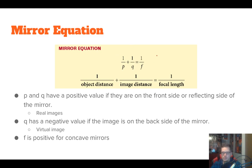We have two equations to use. The mirror equation states that 1/P + 1/Q = 1/F, where P is object distance, Q is image distance, and F is focal length. P and Q are positive if they are on the front side of the mirror, and negative if on the back side. So a real image gives a positive Q and a virtual image gives a negative Q. F is always positive for concave mirrors.